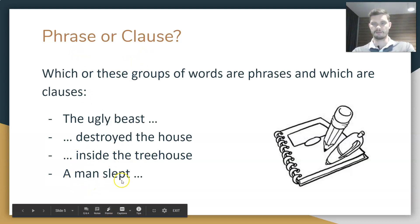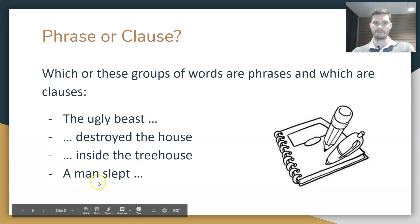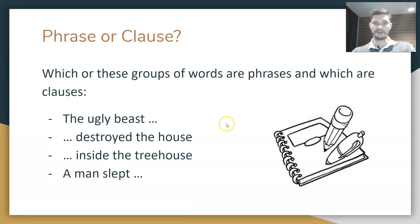'A man slept.' Do we have a verb? Yes — 'slept.' Do we have a subject? Who did the sleeping? The man did. So we know that's a clause — it has both a verb and a subject.